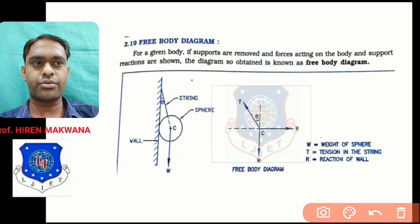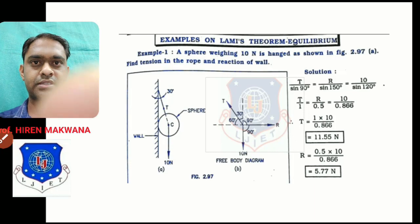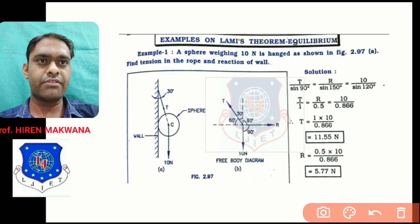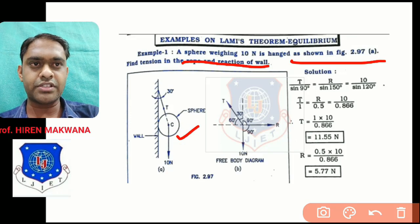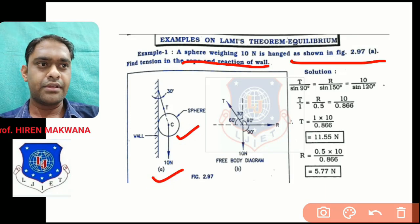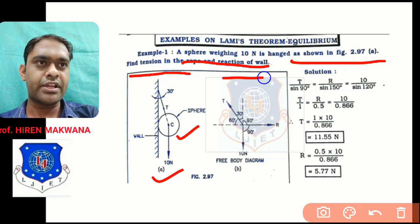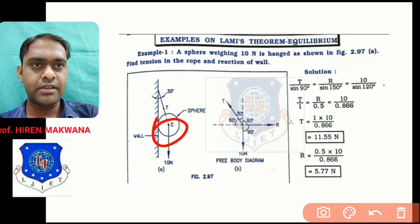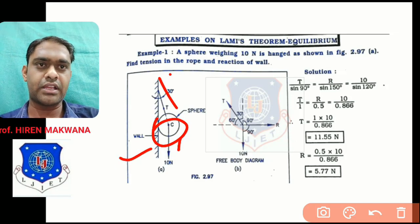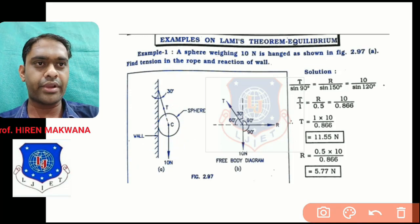In each and every example you have to draw the free body diagram. Example number one is based on Lamy's theorem. A sphere having weight 10 Newton is hung as shown in the figure. We have to find the tension T in the rope and the reaction R of the wall. The sphere is connected to the string with a 10 Newton weight, against the vertical wall.